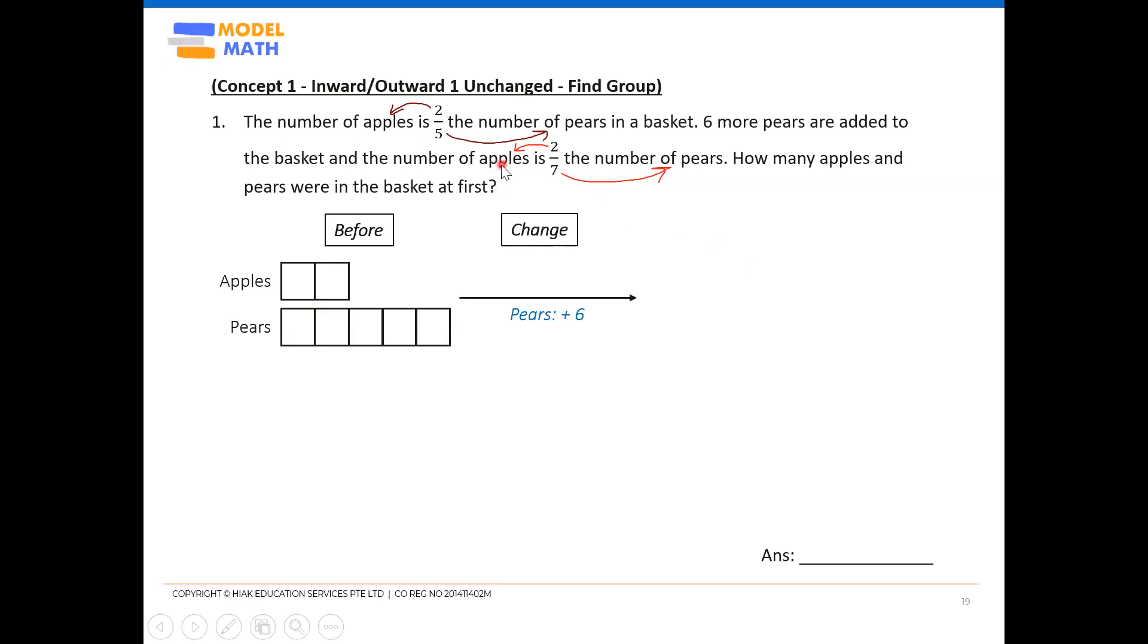After that, I know that the apples is two units, the pears is seven units. So again, draw a model to represent that information. Two units and seven units, this is your after data.